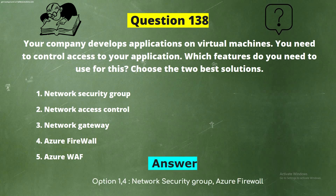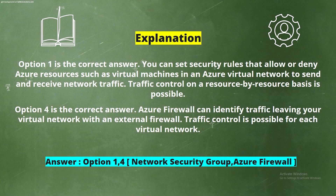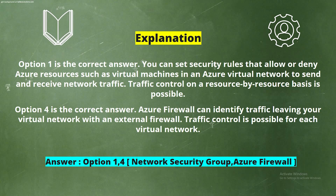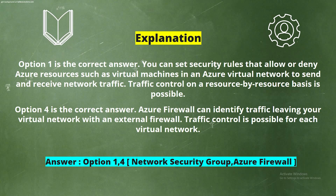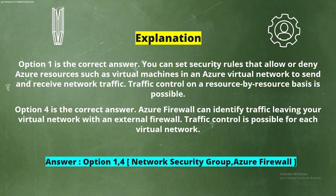Explanation: Option 1 is correct. You can set security rules that allow or deny Azure resources such as virtual machines in an Azure virtual network to send and receive network traffic. Traffic control on a resource-by-resource basis is possible.